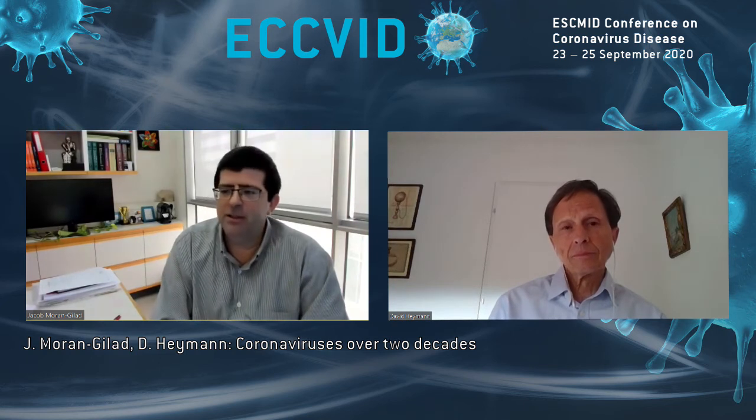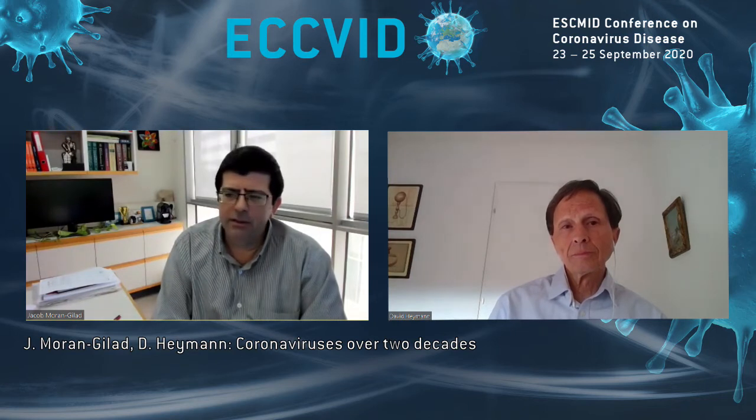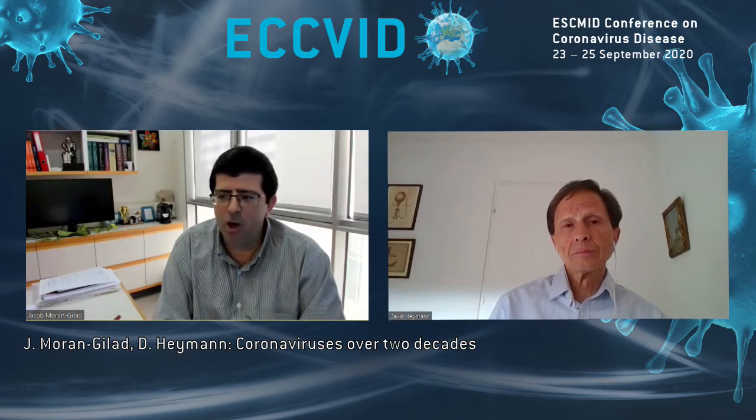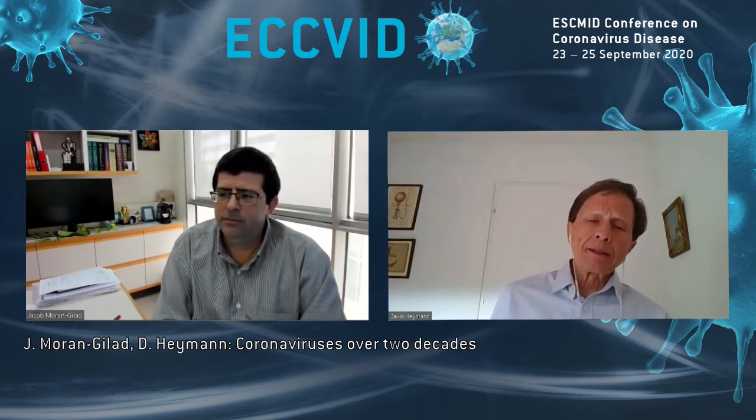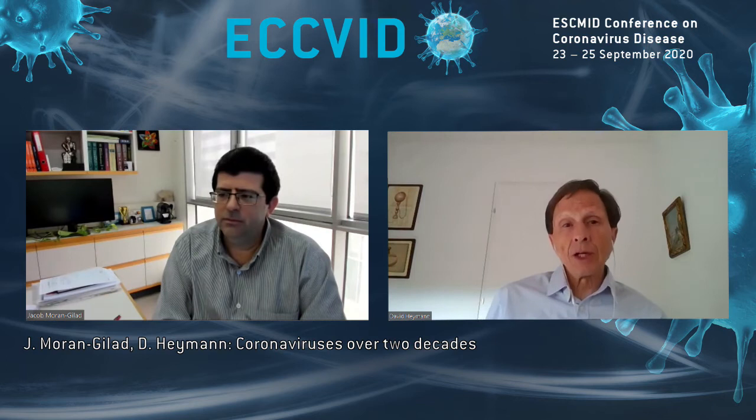We experienced two major coronavirus emergencies over the last two decades — SARS almost 20 years ago, and then MERS. These were quite different incidents with respect to epidemiology. Did we learn something from those incidents that helped us in our current response?